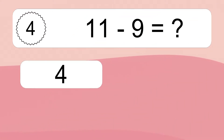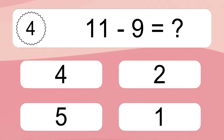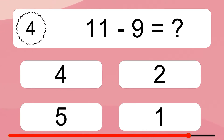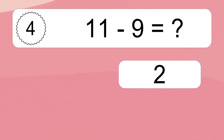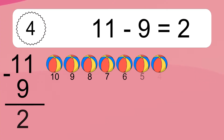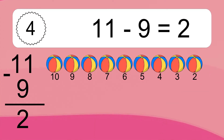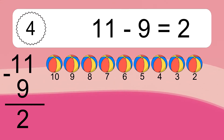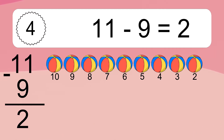11 minus 9 equals what? 11 minus 9 equals 2. Let's count it! 10, 9, 8, 7, 6, 5, 4, 3, 2.